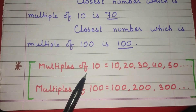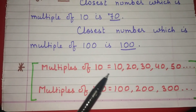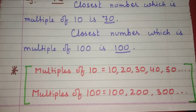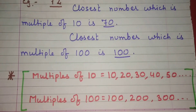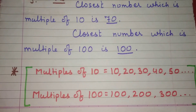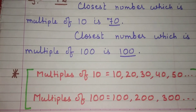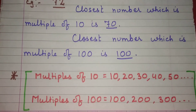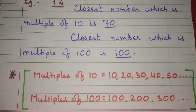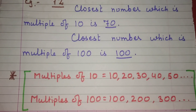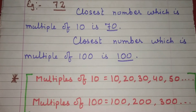Now what is a multiple? Multiples of 10 means 10, 20, 30, 40, 50, etc. And multiples of 100 means 100, 200, 300, etc.